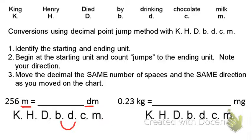Let's do the same thing with 256. We're going to make one jump. Put in the decimal point, so we would write 2560 decimeters.